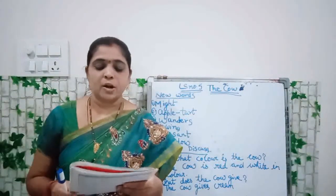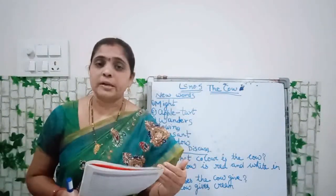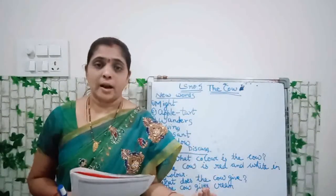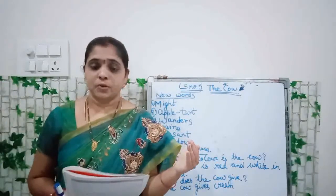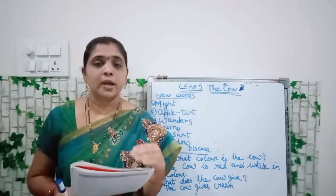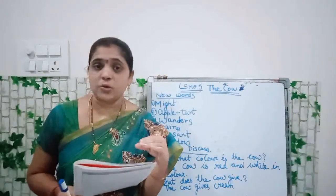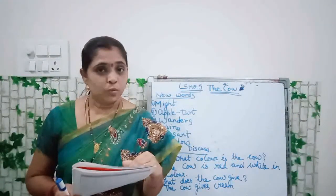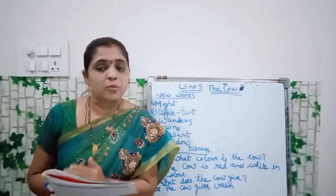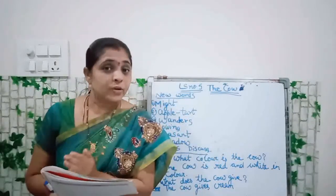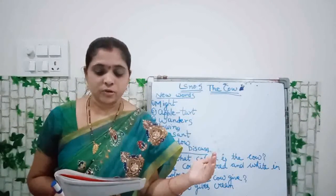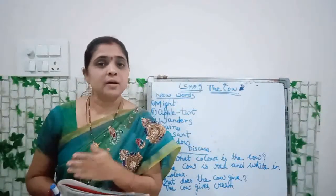She wanders lowing here and there. Wanders means moving from one place to another. Lowing means making sound — moo-like sounds. Cows make moo sounds. She wanders means she will be making sounds and moving from one place to the other. Here and there. Okay.